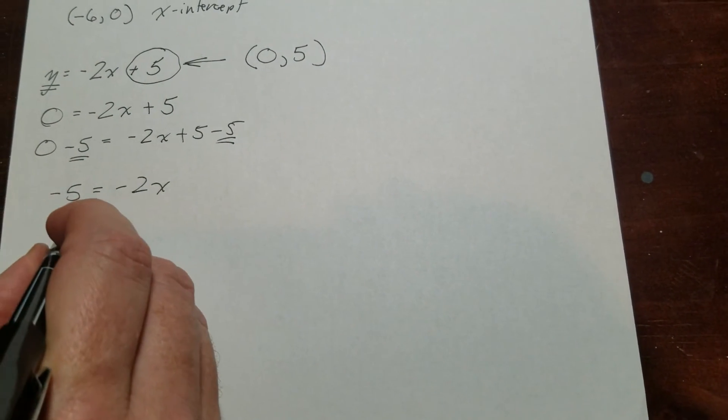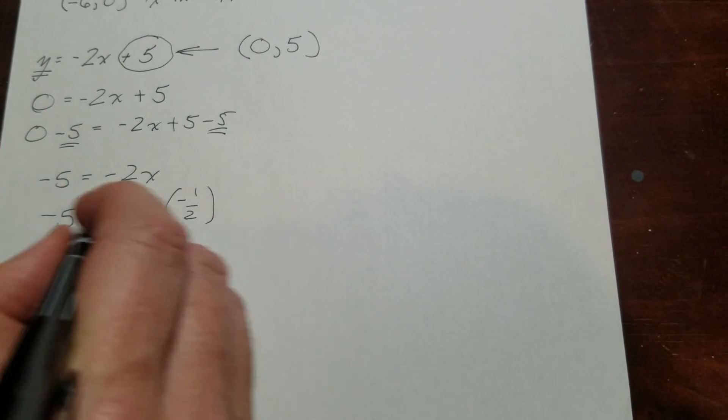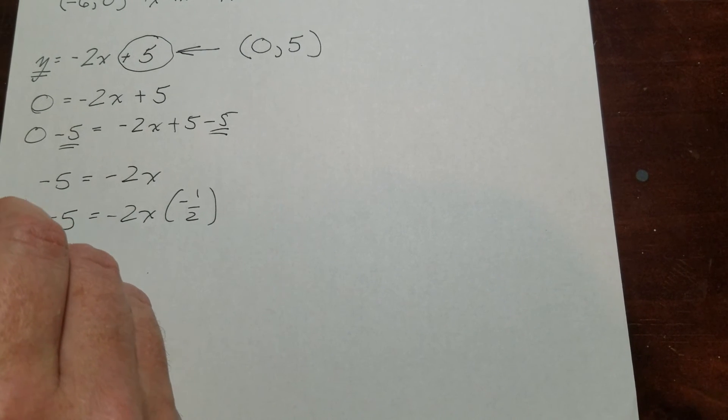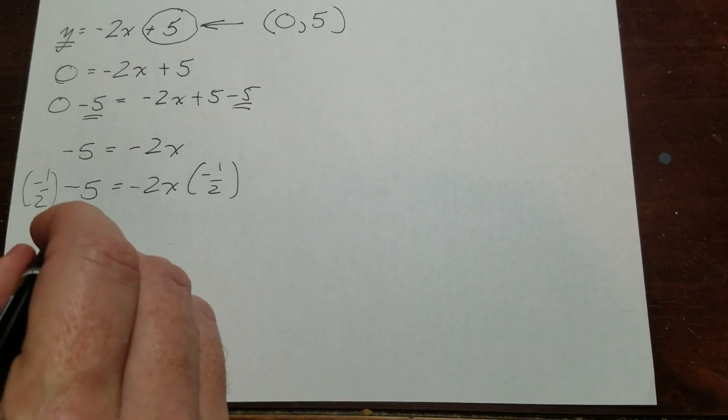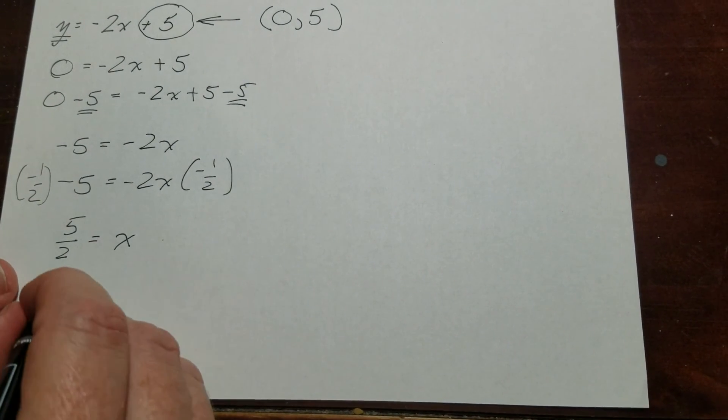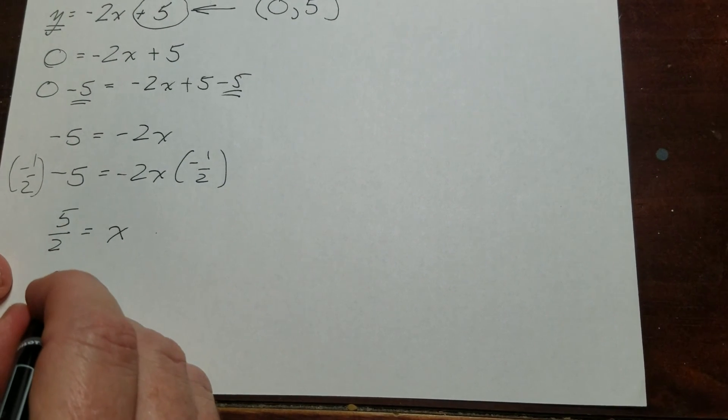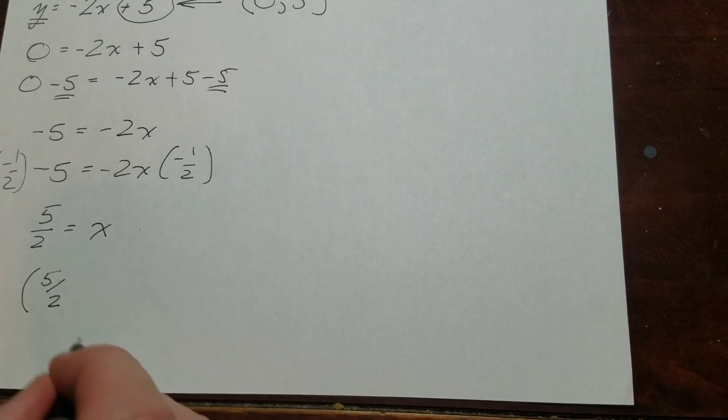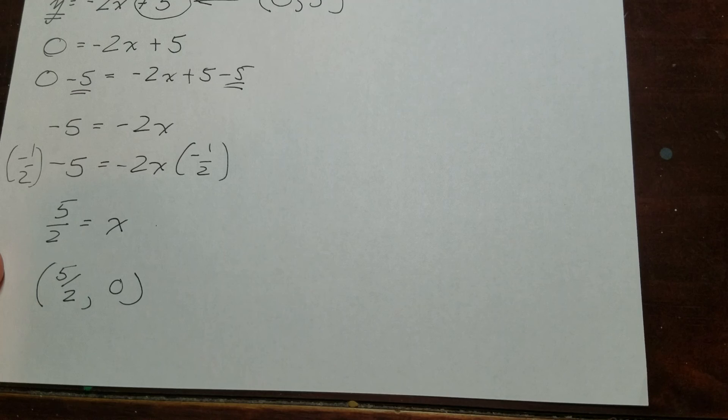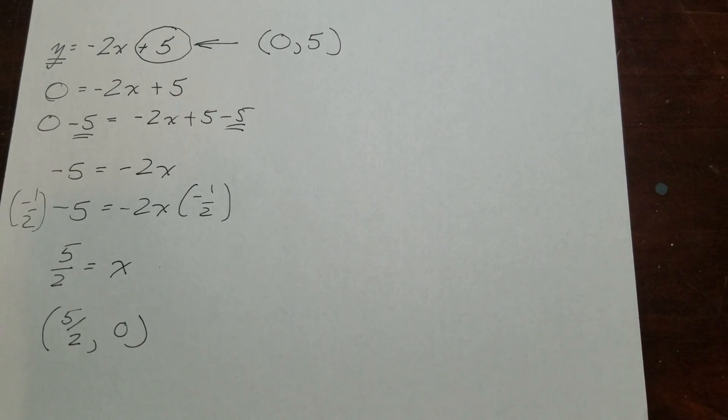And negative 5 equals negative 2x. So you can already tell here that this is going to result in a fraction, but that's fine. It's not really a big deal at all. So this is going to be 5 over 2. And again, you could say the x-intercept is 5 over 2, but you could say that the x-intercept is at (5/2, 0). And that is how you find the x and y-intercepts of a line in slope-intercept form.